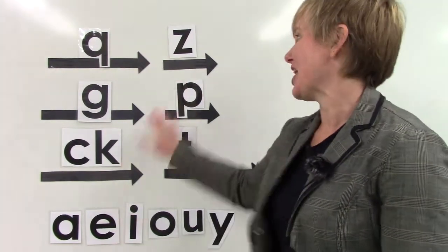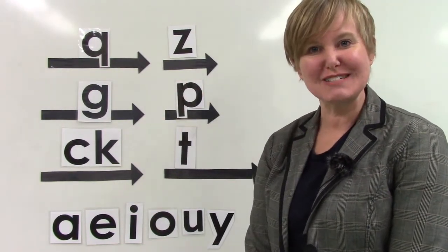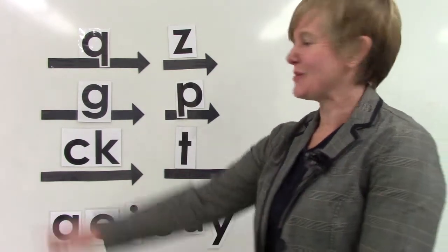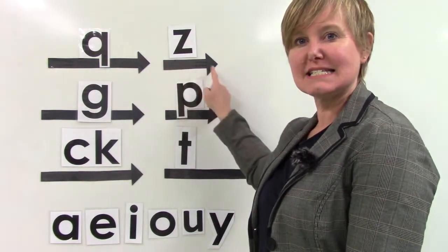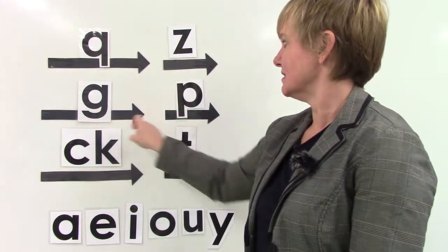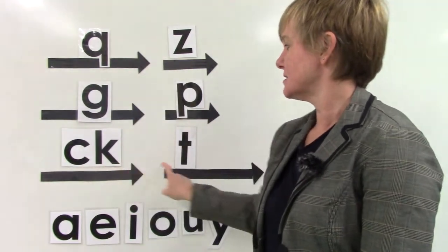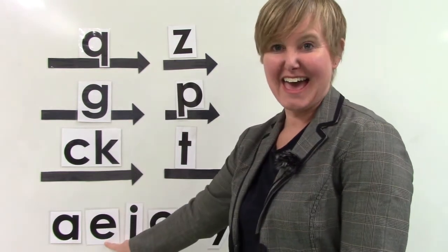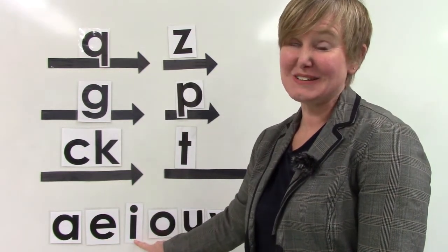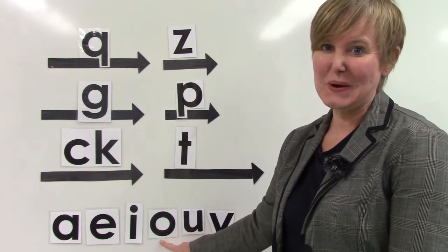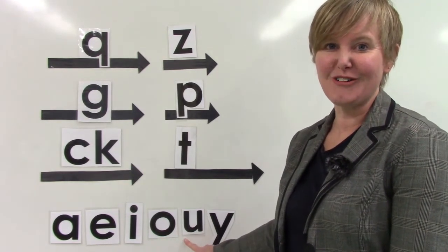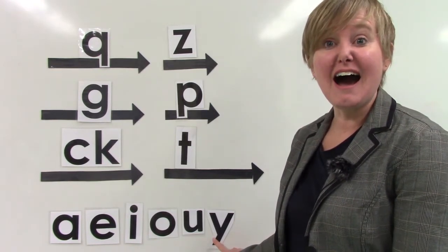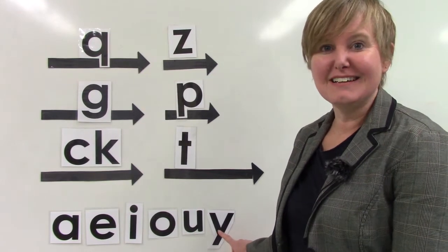Class, we have some more letters here and we're going to go over their sounds. When I point to the letter, I want you to say the sound. Qu. Zzz. G. P. C. T. A or A. E. E or E. I or I. O or O. U or U.